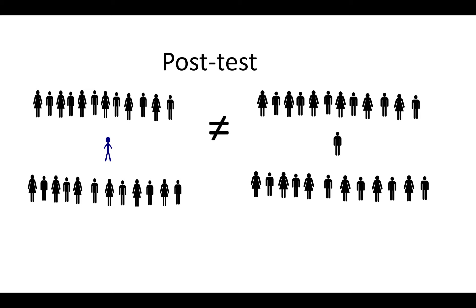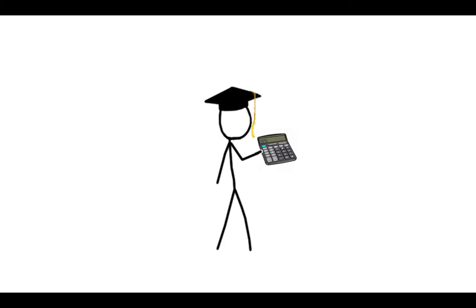But when she analyzes the data, she finds that they are not equal, that in fact, John's class has improved a lot. The researcher then calculates the effect size for the intervention, or how well the intervention worked, and finds that the effect size for her intervention was 1.7.